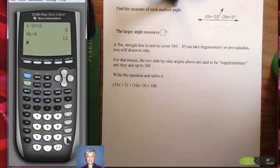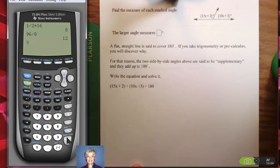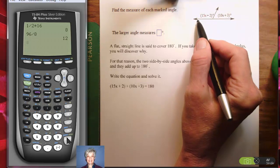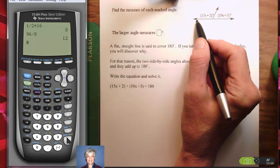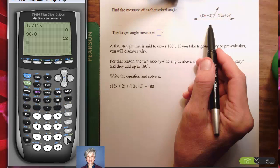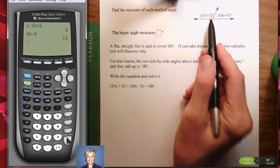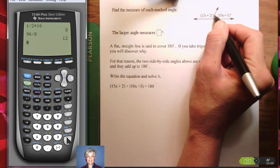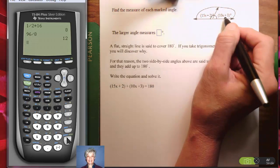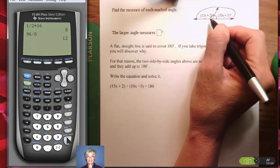If you remember high school geometry, you'll remember that a straight line is called a straight angle, and a straight angle equals 180 degrees. If you take trigonometry, you'll find the reason why. But until then, we're not going to deal with it. What is true is that this angle plus this angle equal this whole angle, which means this angle plus this angle are going to equal 180.